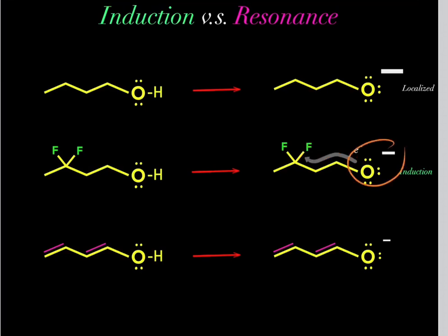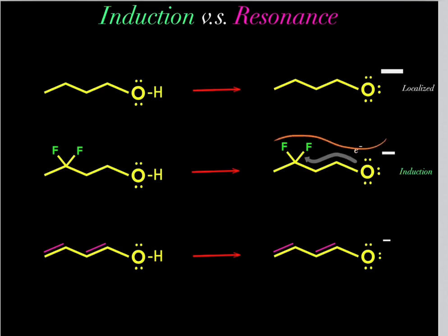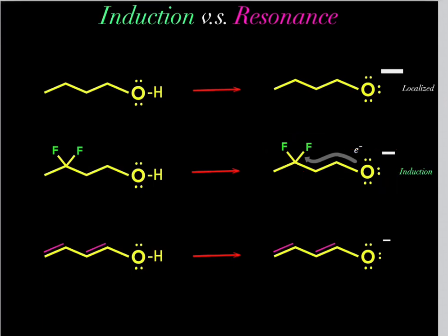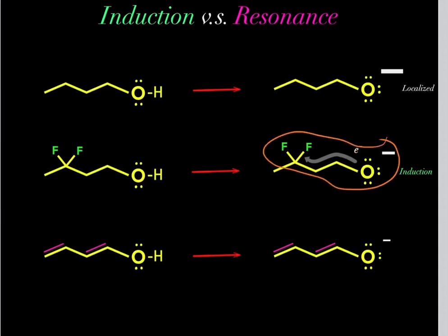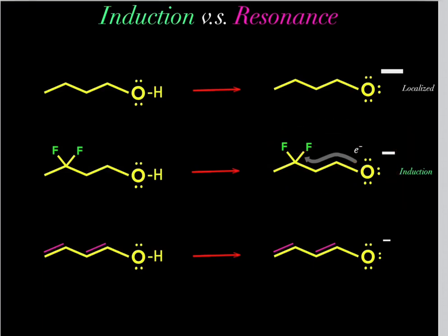Through the induction effect, this negative charge density is attracted towards these fluorines — they pull negative charge density towards them because that positive Zeff nuclear charge attracts negative electrons. So even though this oxygen has a formal charge of negative one, that charge is going to be spread out over a larger volume because fluorine is pulling some of that negative charge density.